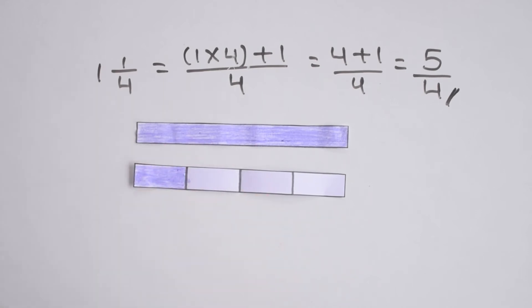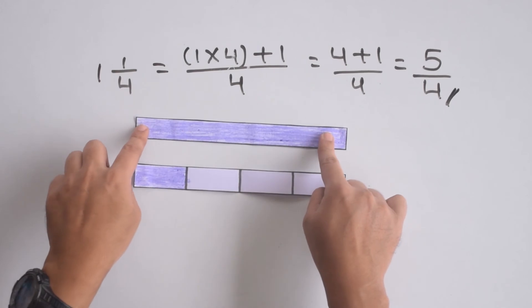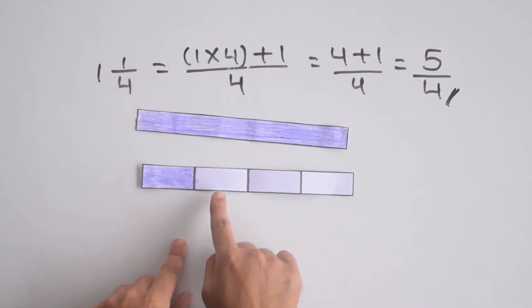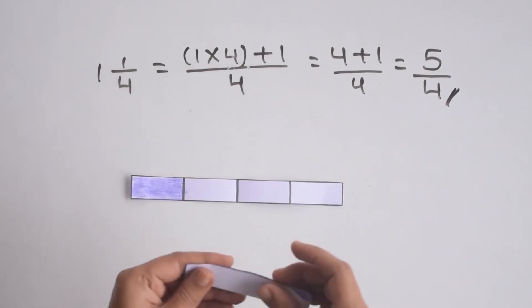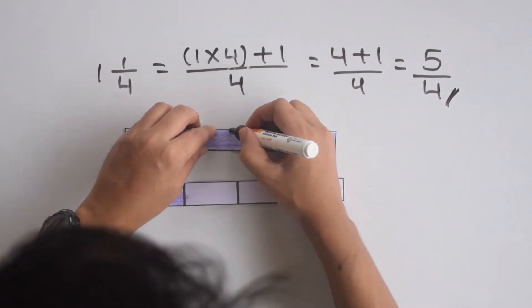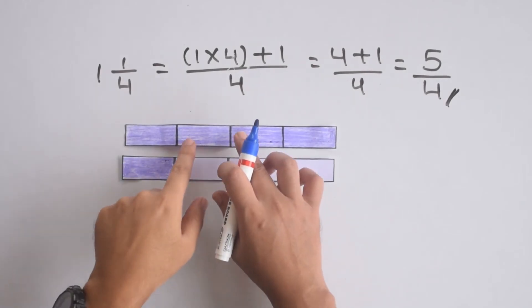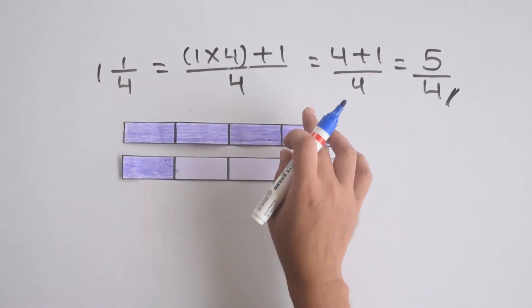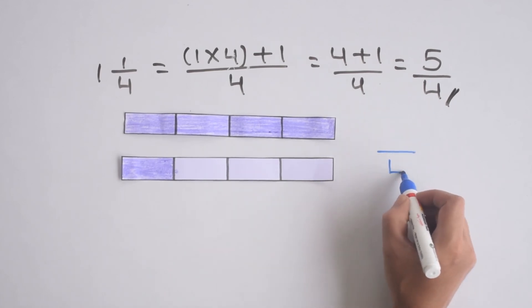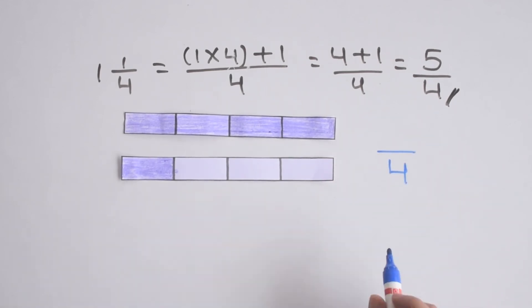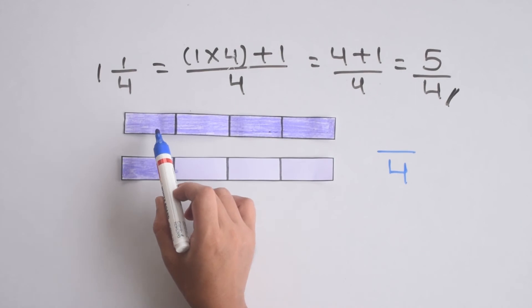Now to see what improper fraction this represents, we need to make 4 parts in each strip. How many parts are there in one paper strip? In both strips, we have 4 parts. So our denominator remains 4. And how many parts are colored? 1,